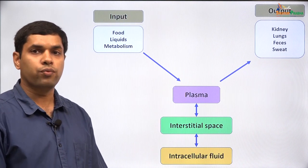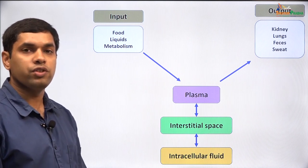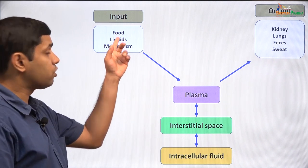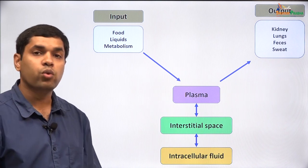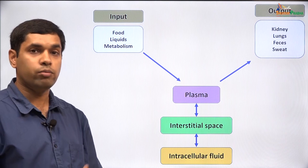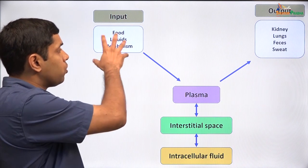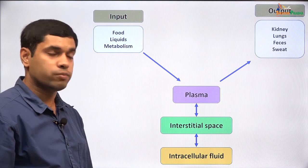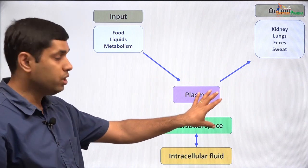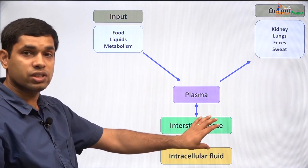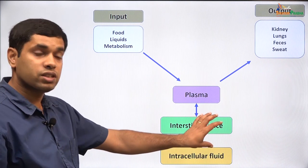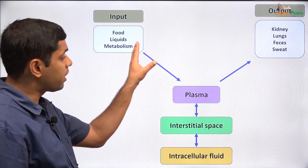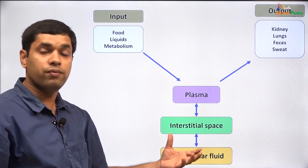Our body maintains a balance of water intake and water output. We take water primarily in the form of fluids and through the various foods we consume. A certain amount of water is also produced due to metabolic activities within the body. The water taken into the GI system gets absorbed and reaches the plasma, which is circulated to different parts of the body. From plasma, this water moves into the interstitial space surrounding the cells, and from there it can move into the intracellular fluid.